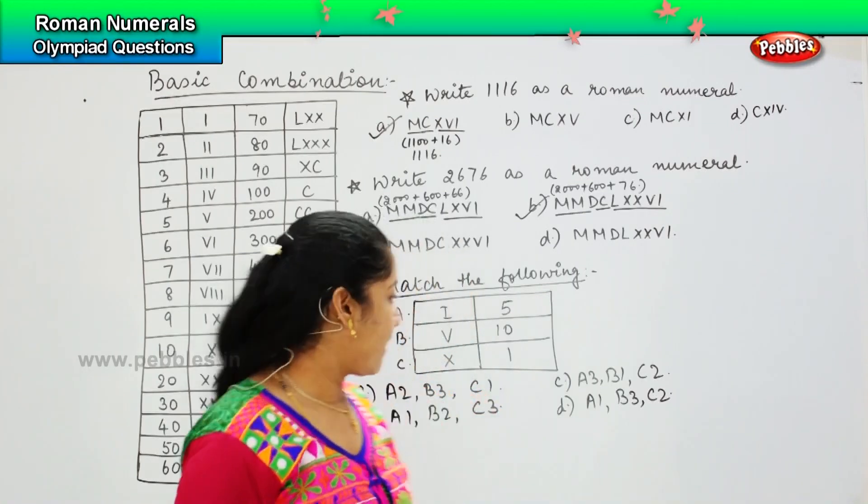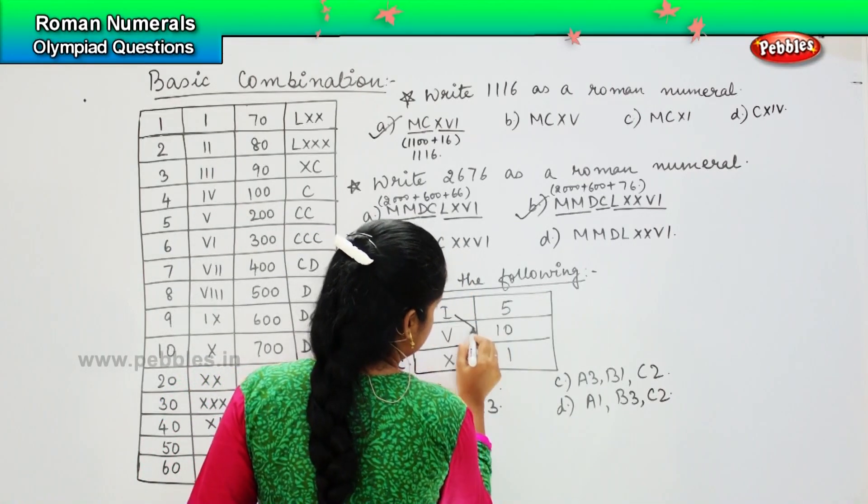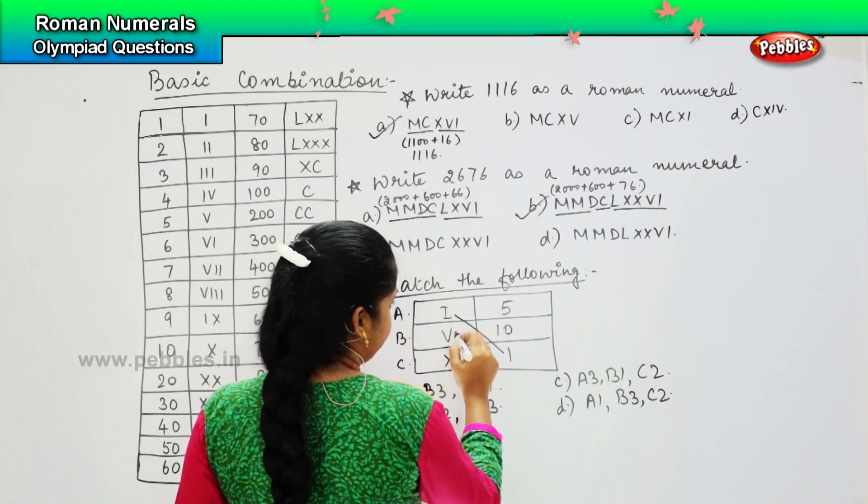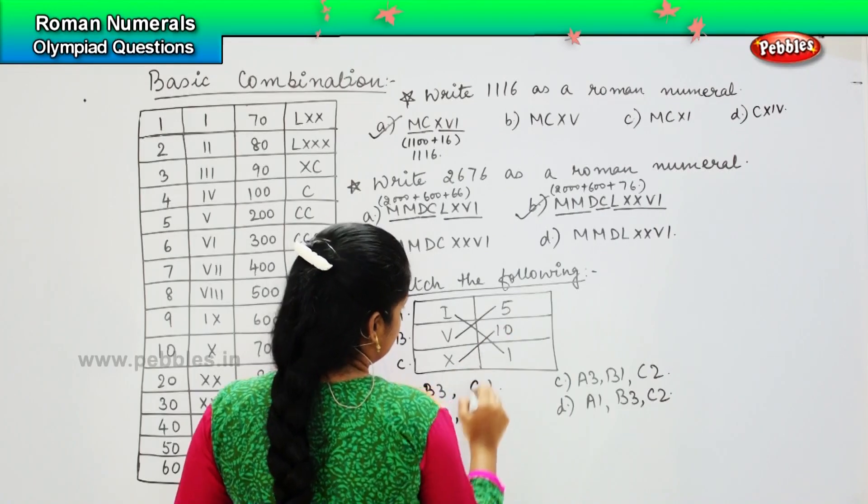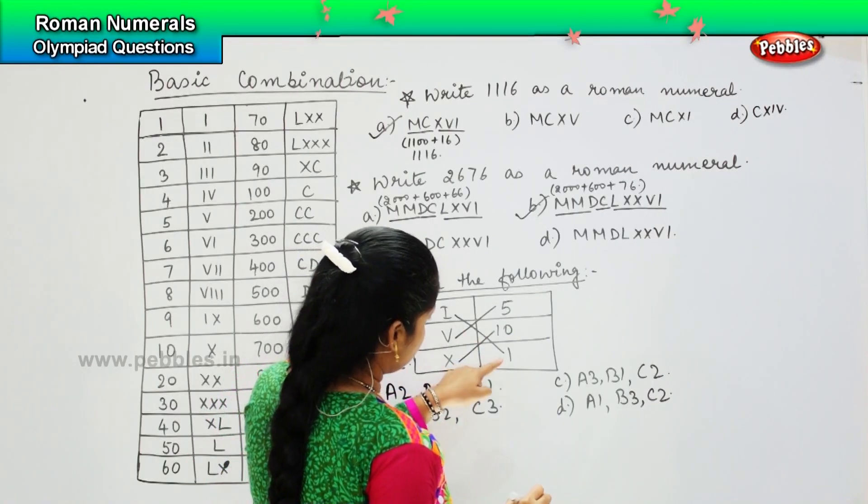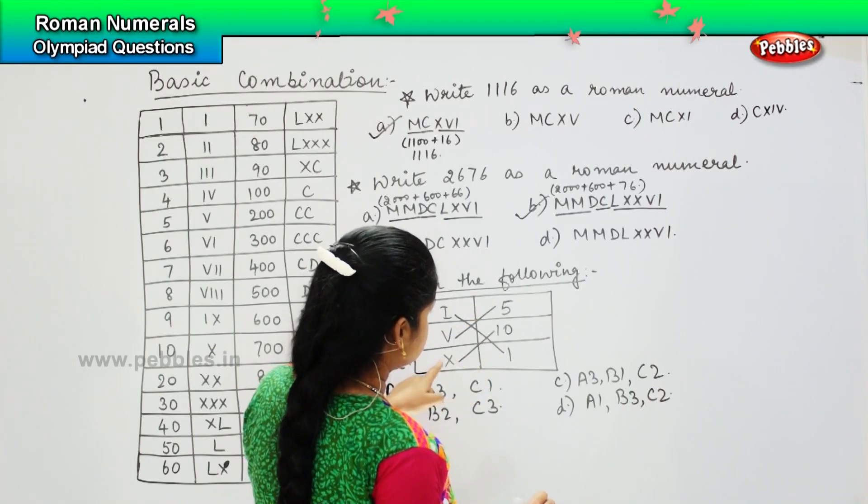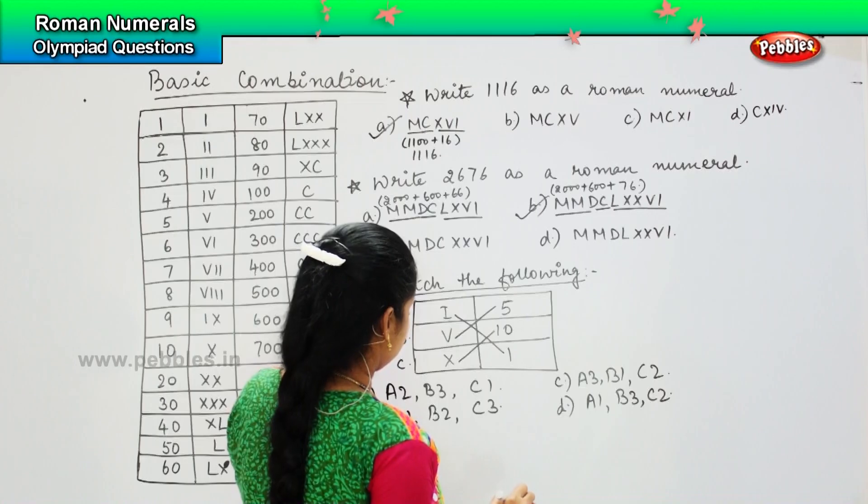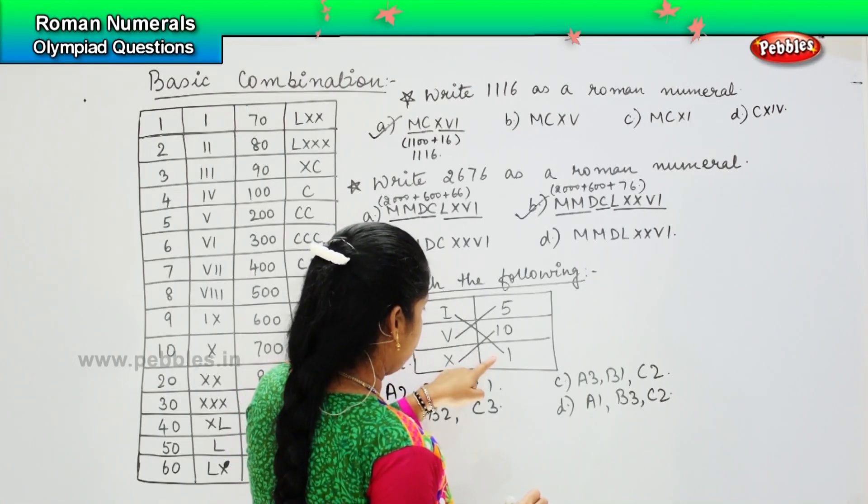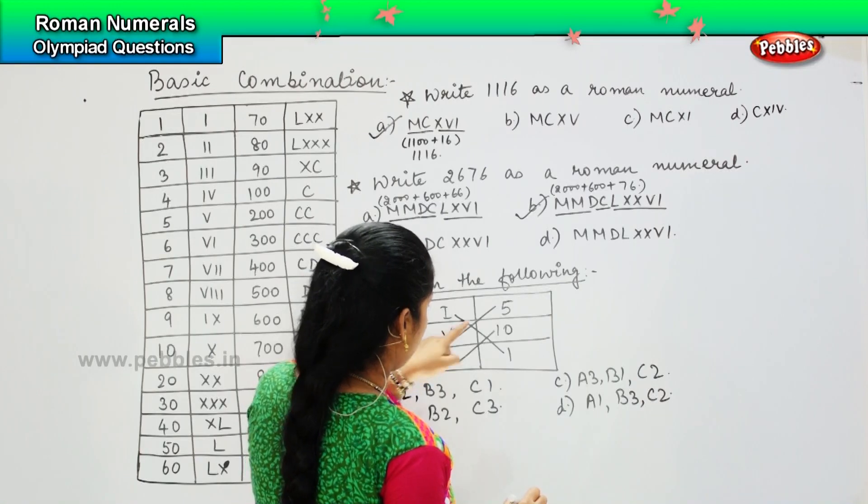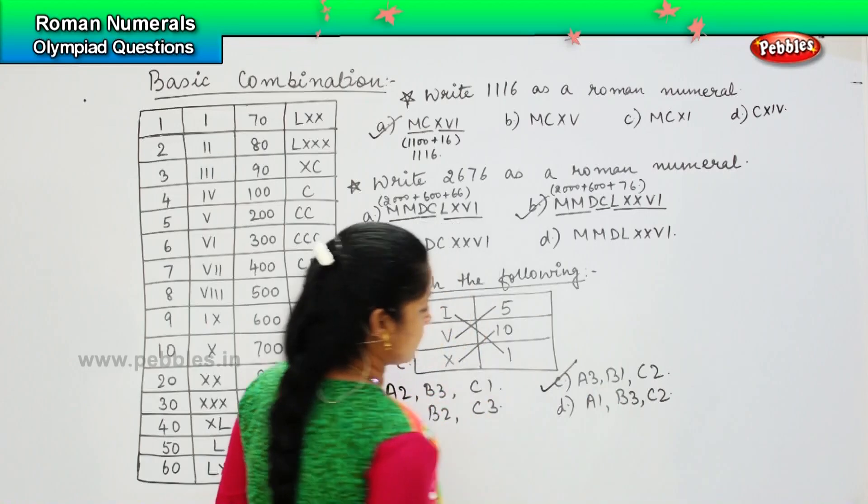So which is the right one, children? I is 1, right? Then V is 5 and X is 10, which is A3, B1, C2. That is option C. Clear?